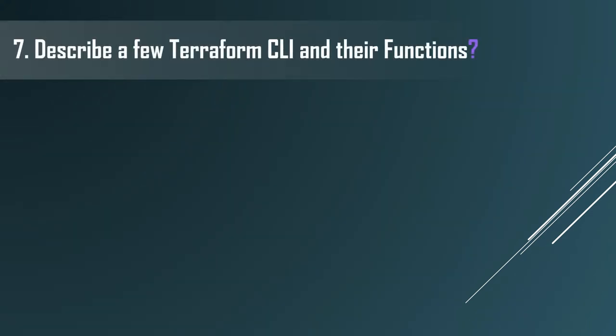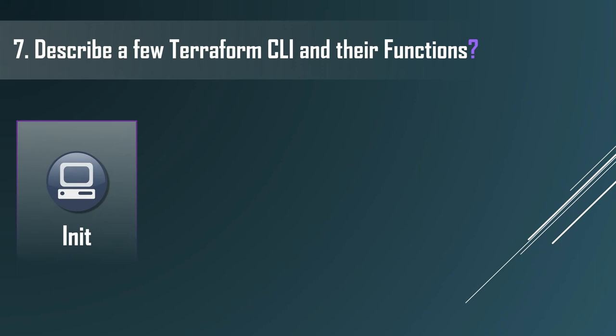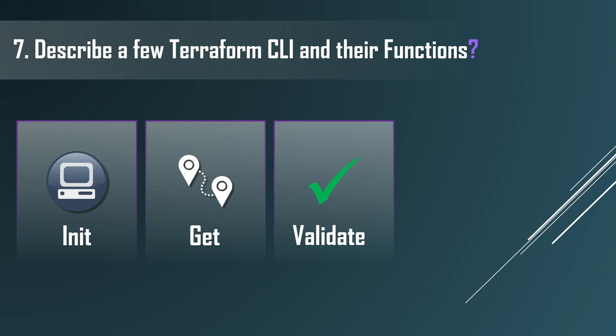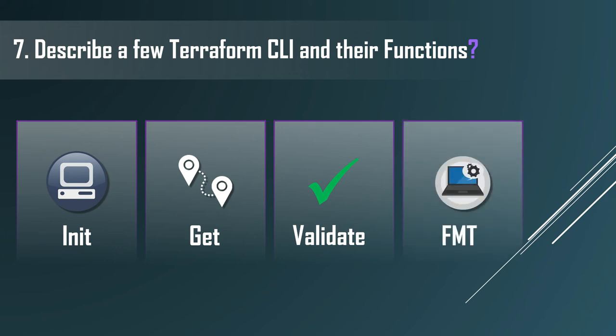The seventh question: describe a few Terraform CLI commands and their functions. Firstly, we have the 'init' command, which is used to initiate the process included in Terraform. Then we have the 'get' command, which helps to chart a path to a mentioned module that can be triggered as and when required. Using the CLI, you can create a visual representation of the configuration using the 'graph' command. The 'validate' command is used for validation of the configuration file to check if they're syntactically consistent. Finally, the 'fmt' command reformats configuration files within a standard set of format and style.